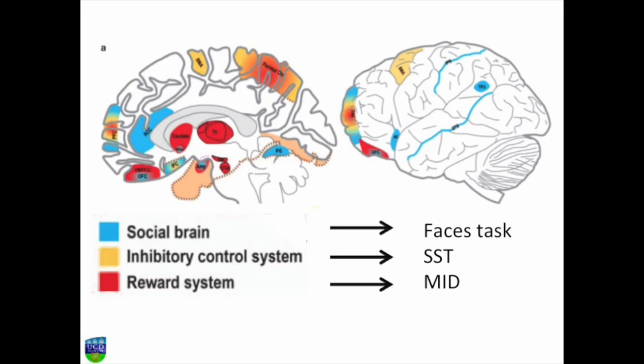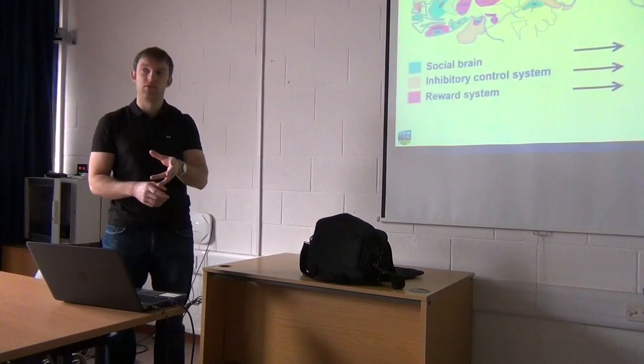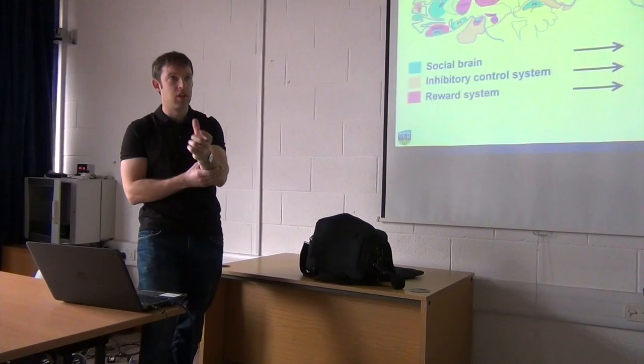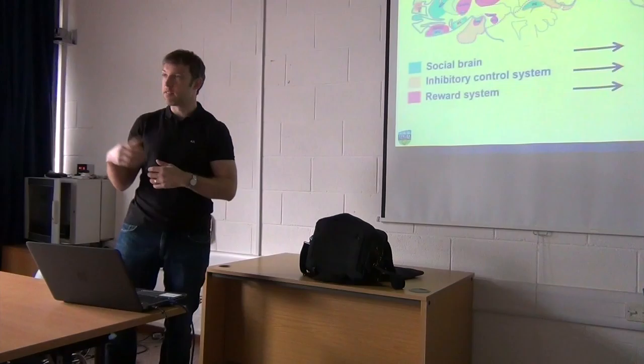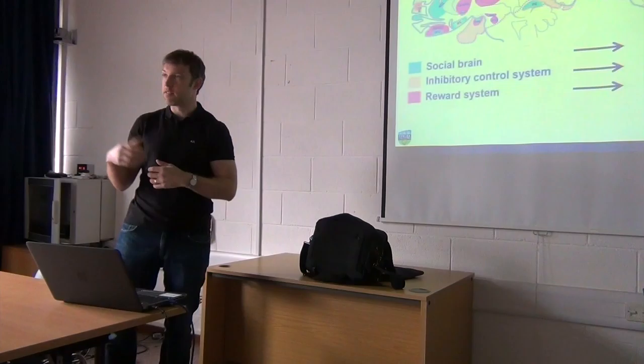The study targeted systems particularly important for adolescents. Fourteen is a good age because about half of them have tried drinking alcohol by then — it's the tipping point between trying substances and not. So it provides a good split for finding people who are clean versus those who have done quite a bit by age 14.